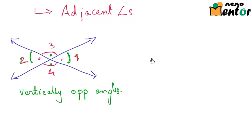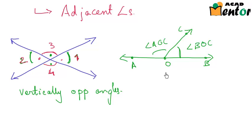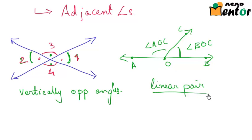How about a linear pair of angles? Whenever two adjacent angles form a line — meaning the non-common arms of the adjacent angles form a line — with OC as the common arm, angle BOC and angle AOC are known as a linear pair of angles, because their non-common arms OA and OB form a line.